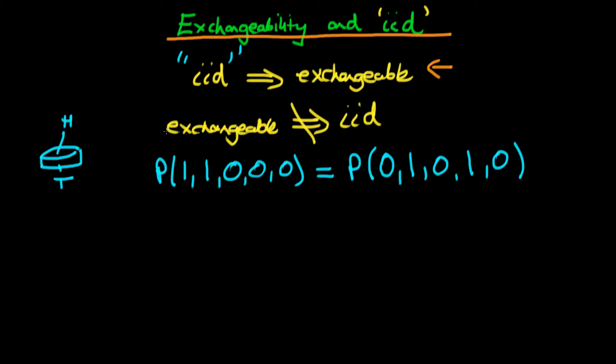But can we think of an example whereby our random variables are exchangeable, but that doesn't imply that they are IID? Well, there is quite a famous example of this, which is known as Polya's urn.